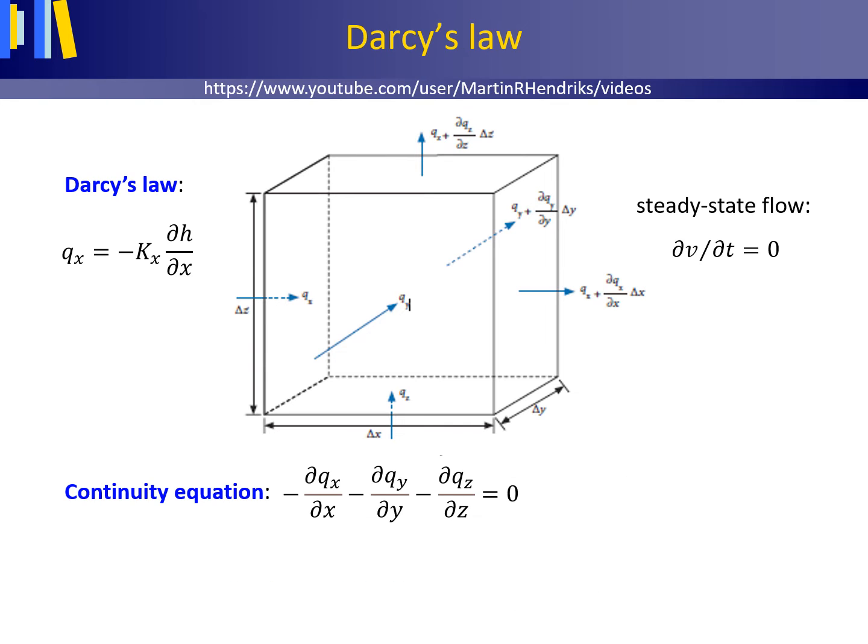Darcy's law can be written as shown here. The volume flux density or specific discharge in the x direction equals minus Kx, the saturated hydraulic conductivity in the x direction, times the hydraulic gradient dH/dx in the x direction. H is the hydraulic head. And likewise for the y and z directions.